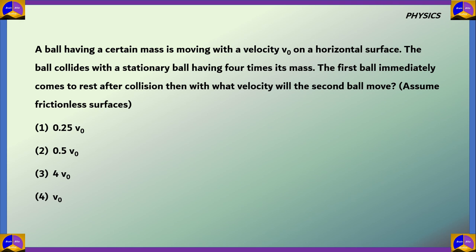A ball having a certain mass is moving with velocity v0 on a horizontal surface. The ball collides with a stationary ball having four times its mass. The first ball immediately comes to rest after collision. Then with what velocity will the second ball move? Assume that surface is frictionless. So for this we have to understand the situation. A ball of mass m is going with velocity v0 towards a ball with mass 4m. After colliding the ball with mass m comes to rest and the ball with mass 4m starts moving. We have to find with what velocity will this ball move?